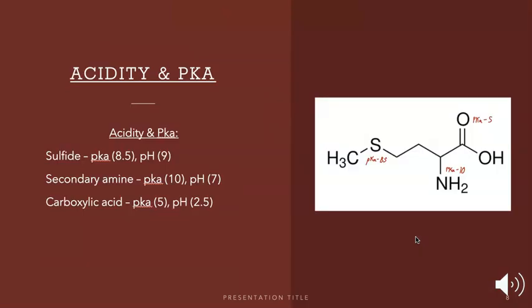Acidity and pKa: I provided acidities and pKa's for sulfide, secondary amine, and carboxylic acids. For sulfide our pKa is 8.5 with a pH of 9. Secondary amine pKa of 10, pH of 7 which is neutral, and our carboxylic of course is an acid, so pKa of 5 and a pH of 2.5.